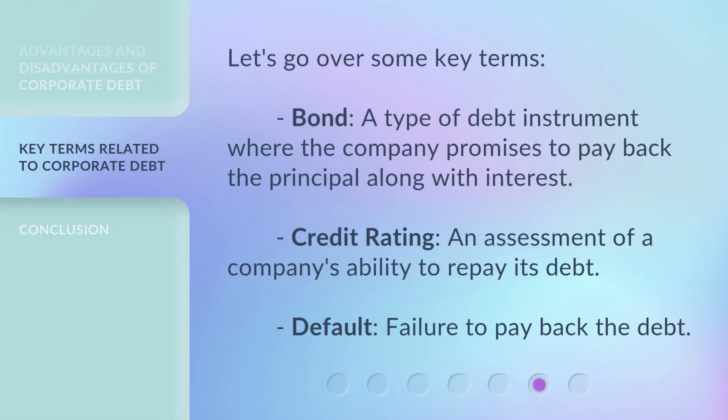Let's go over some key terms. Bond: a type of debt instrument where the company promises to pay back the principal along with interest. Credit rating: an assessment of a company's ability to repay its debt. Default: failure to pay back the debt.